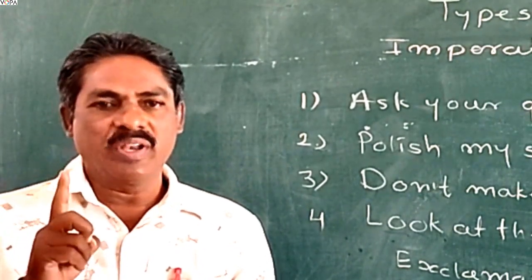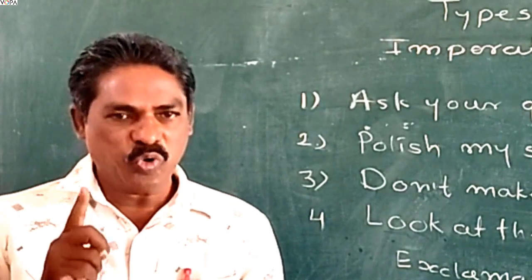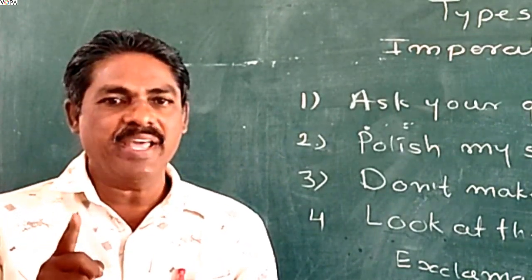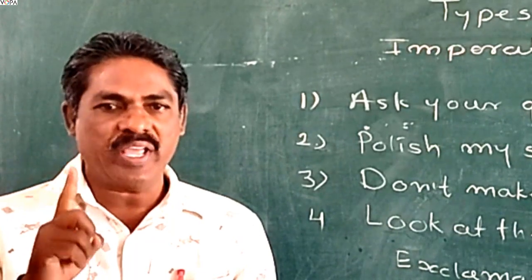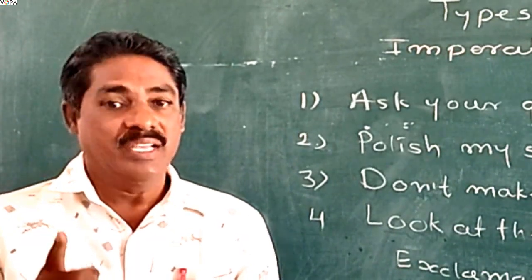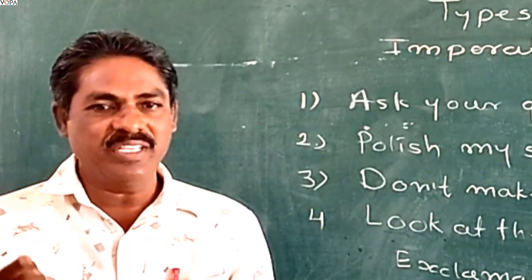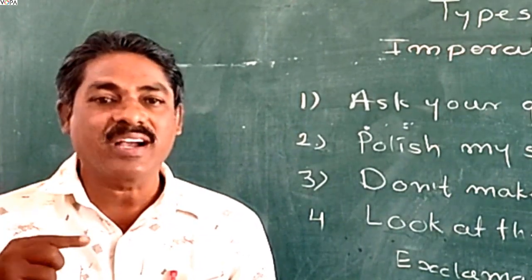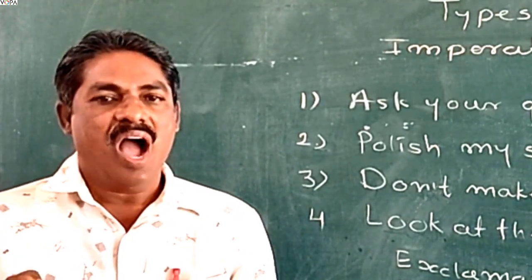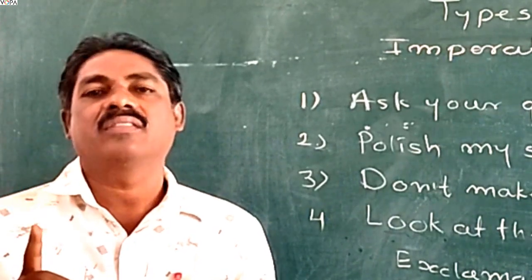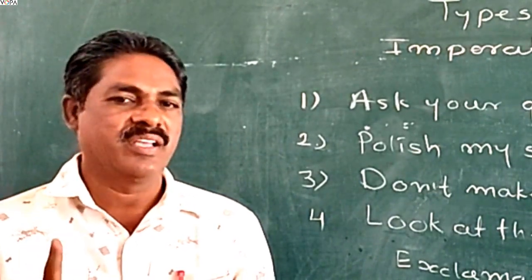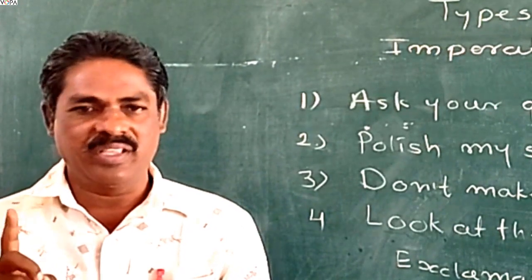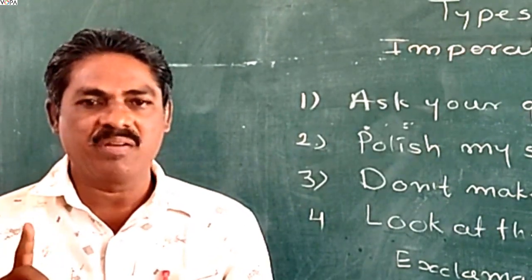Students, one more thing you have to remember: imperative sentences do not have a subject. Instead, a directive is given to an implied second person. Adnirthi vatnirthi shuruwa kriyapadana purtaste, aani adnirthi vatnirthi shivki nemi poorna viram asto.